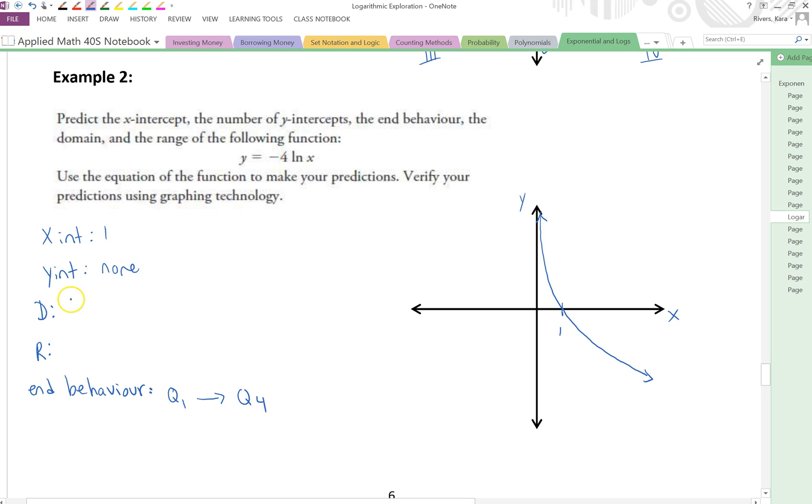Domain then goes from 0 to infinity. Well, that hasn't changed. Remember, round bracket for the 0 because it approaches 0 but doesn't actually cross 0. And the range goes from negative infinity to infinity. Alright, so in general, this is what we see for increasing and decreasing logarithmic functions.